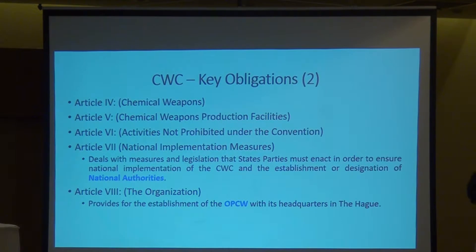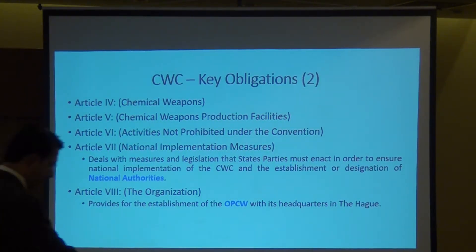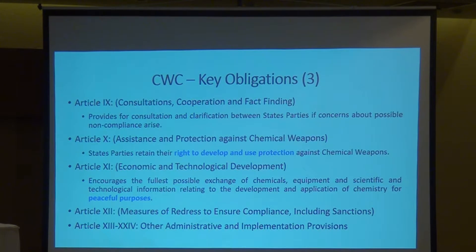Article 4 talks about the nature of chemical weapons, how declarations have to be made, and what specific verification provisions apply. Article 5 covers chemical weapons production facilities. Article 6 covers activities not prohibited under the convention. Article 7 covers national implementation measures — very important — laying down requirements for countries to have an implementation system. Article 8 covers the organization itself, and other articles address consultation, cooperation, fact-finding, assistance and protection, and economic and technological development.